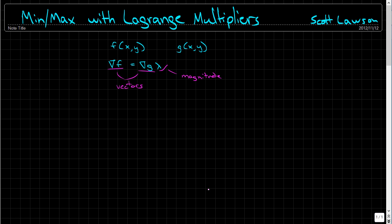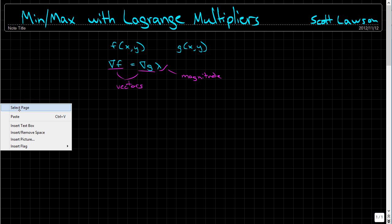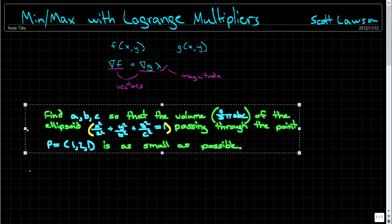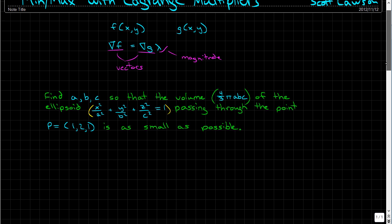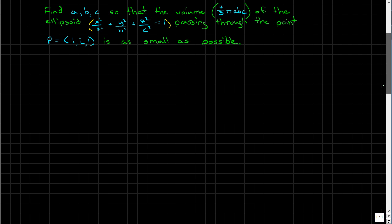Here's an example question for finding minimum and maximum values using Lagrange multipliers. It says: find the a, b, and c values so that the volume (4/3)π·abc of the ellipsoid is minimized, given that the ellipsoid passes through the point p = (1, 2, 1).